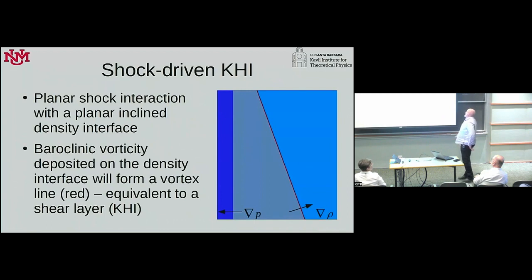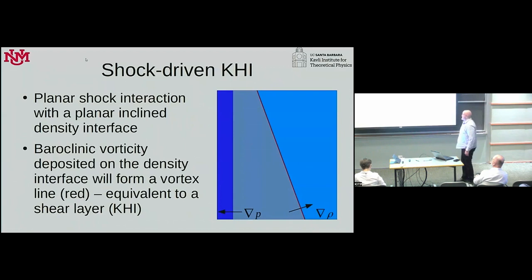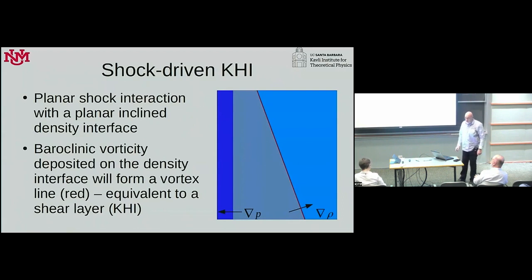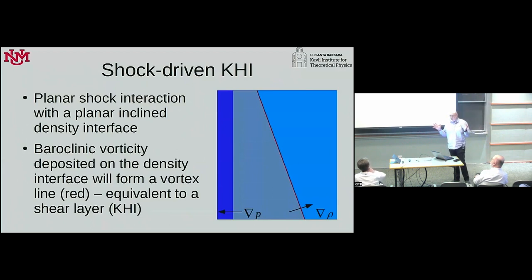Let's say we have a density interface at a constant angle to the pressure gradient. In this case, at least in first approximation, as these interfaces cross, there will be a vortex line deposited right on that density interface. When you are doing numerical simulations in vorticity formulation, what do you use a vortex line for? A shear layer.